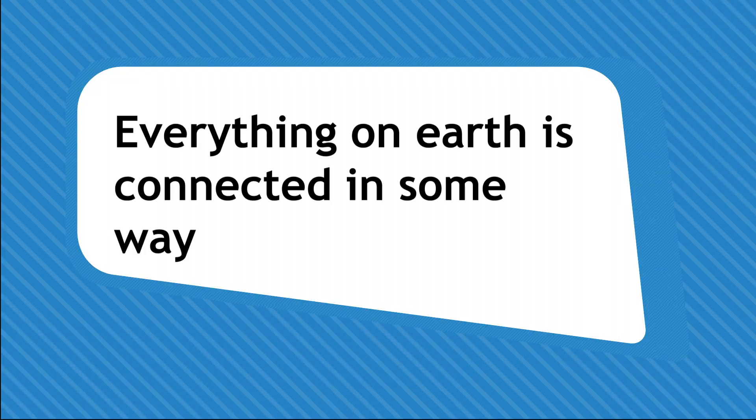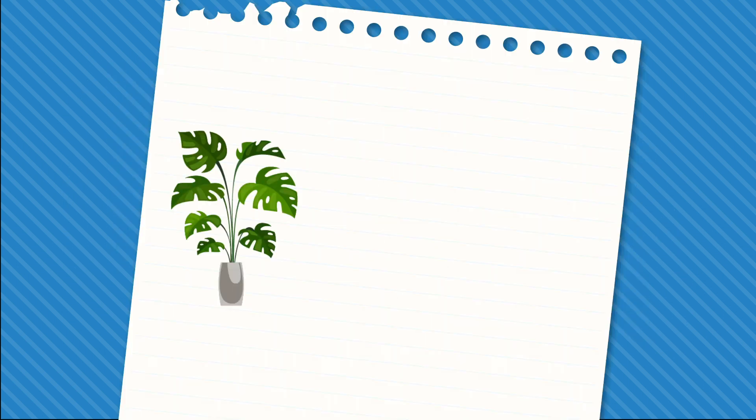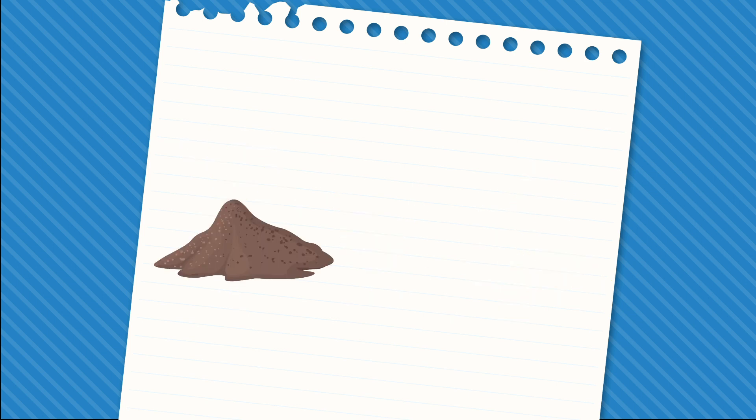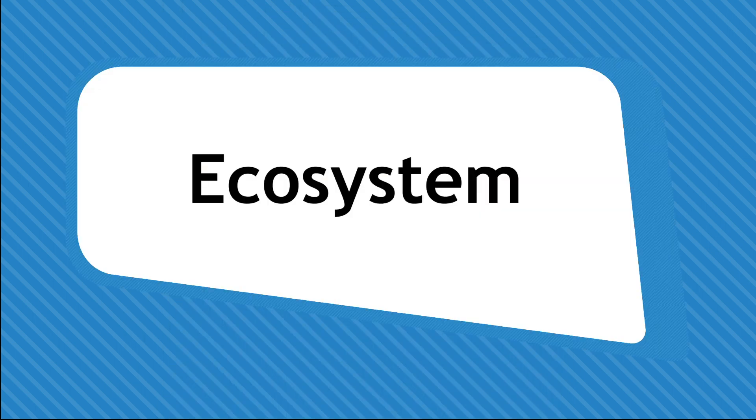Everything on our earth is connected in some way. We have living things like plants, animals and other organisms. These need to interact with non-living things such as soil, water and sunlight to create a system which sustains life. This is an ecosystem.